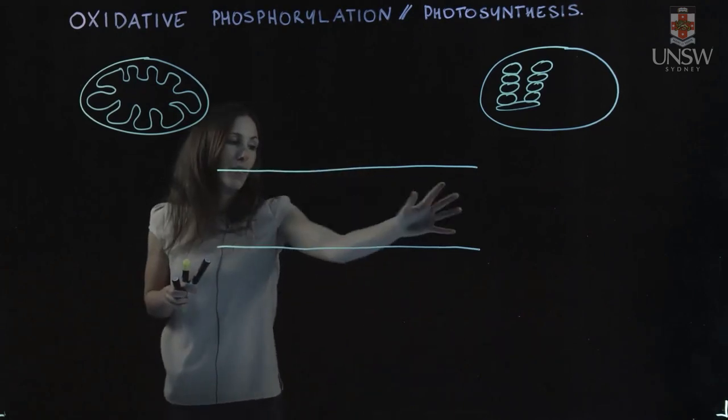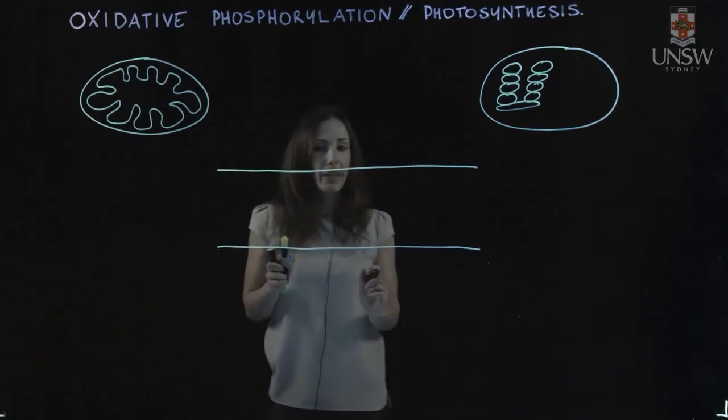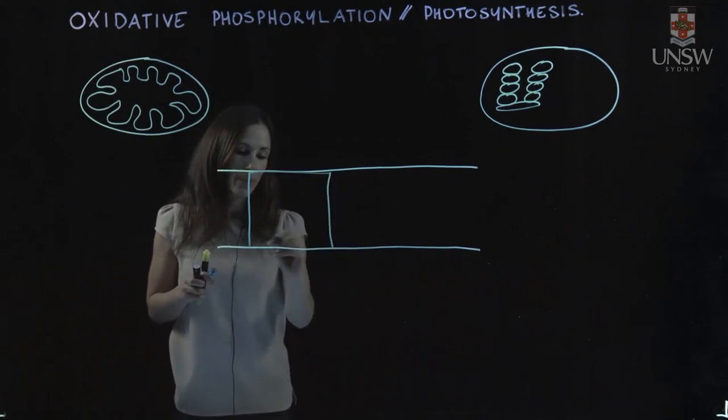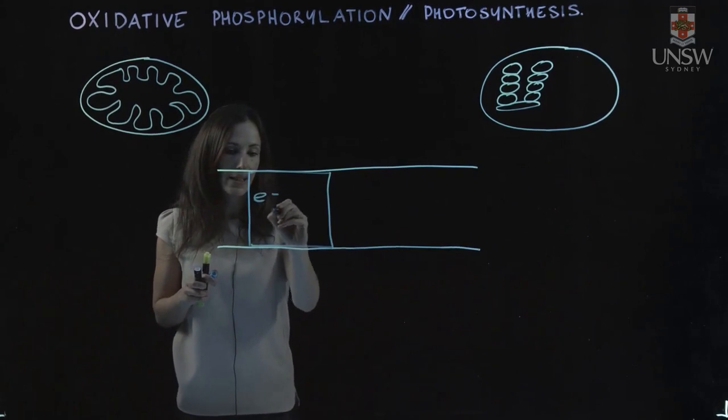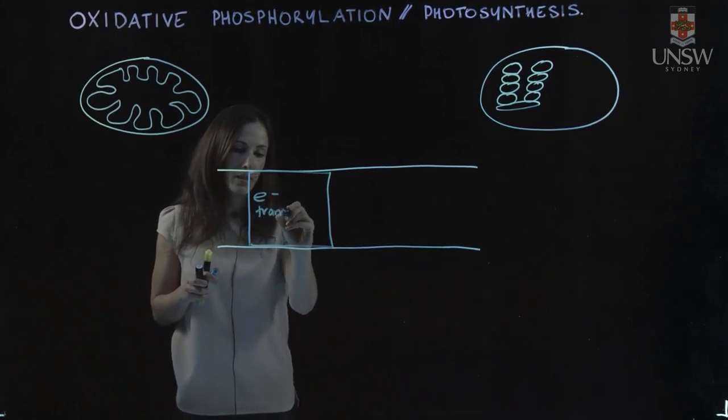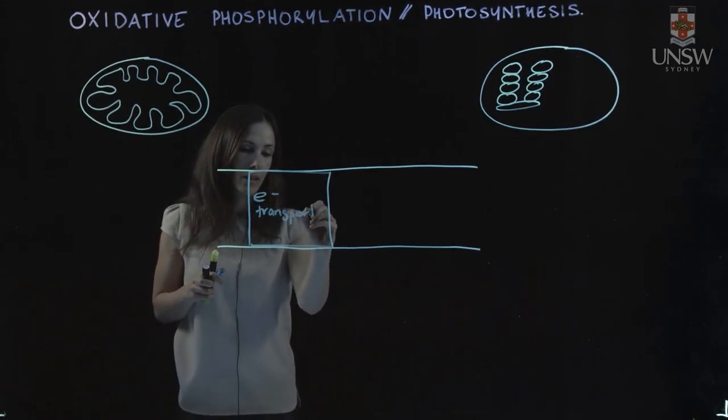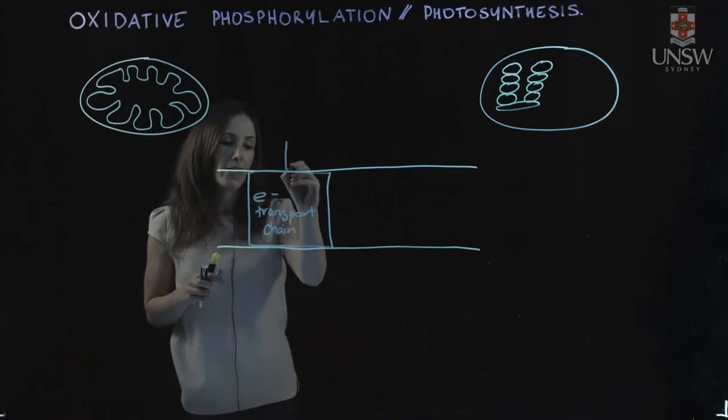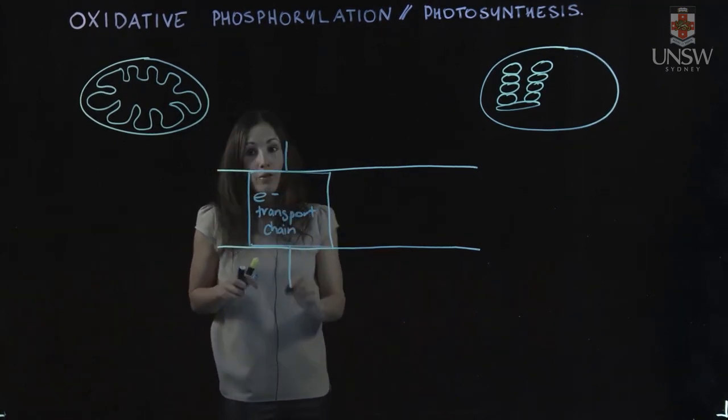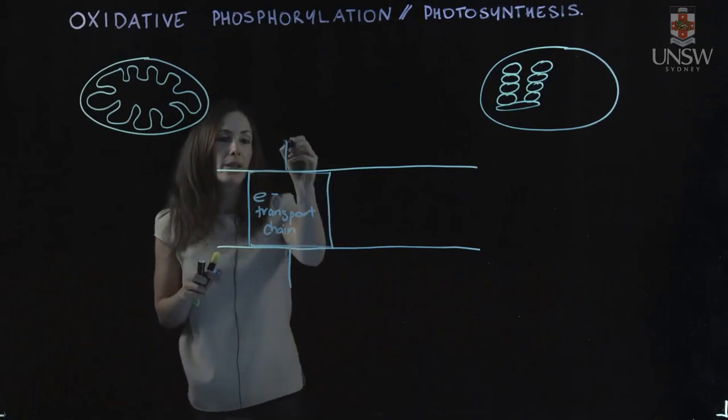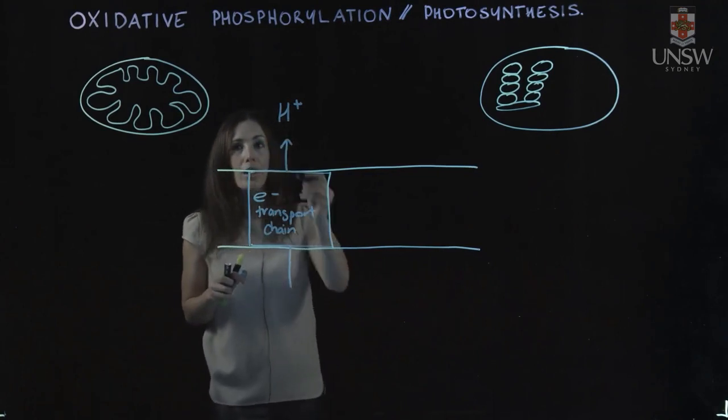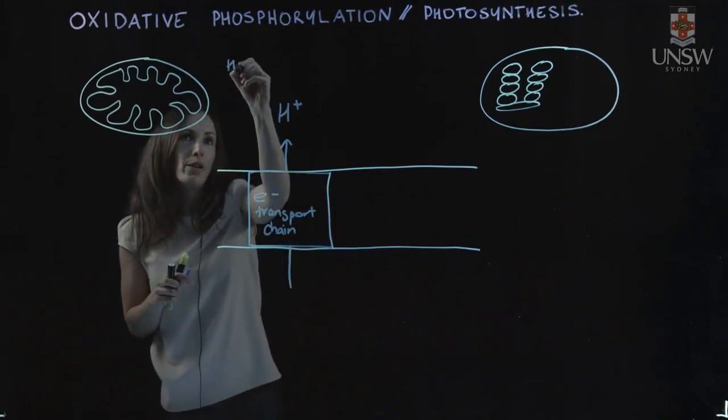Here we have a membrane, and in both systems, what they have in common is an electron transport chain. So we're just going to draw that like this. So electron transport chain, and that is really important in generating a proton gradient. We have protons being transported from one side of the membrane to the other, and that gives us an area of high proton concentration on one side.